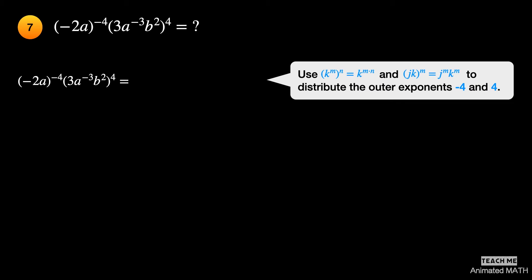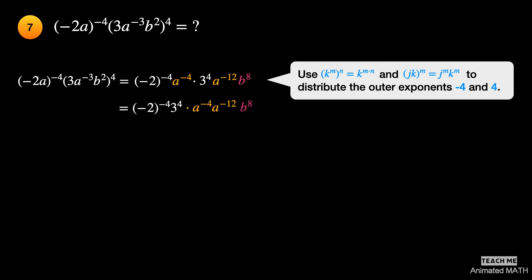Use the seventh and eighth properties to distribute the exponents negative 4 and positive 4 to the terms inside the parentheses. The exponent of base negative 2 is negative 4. The exponent of a is negative 4. The exponent of 3 is positive 4. The new exponent of a is negative 3 times 4, or negative 12. The new exponent of b is 2 times 4, or positive 8. Group the constants together and group the variables together to easily spot bases that can be simplified.